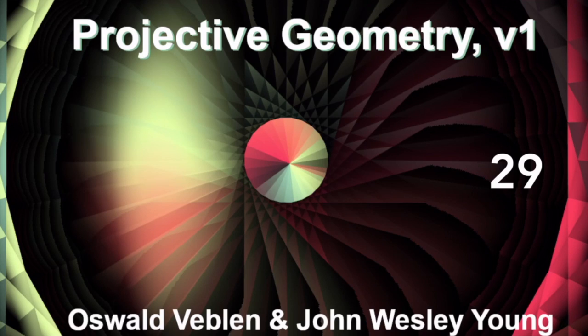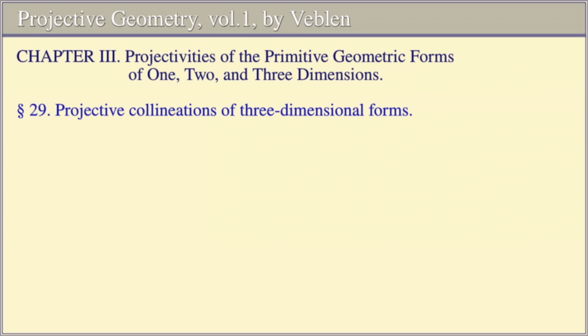Projective Geometry, Volume 1, by Oswald Veblen and John Wesley Young. Chapter 3: Projectivities of the Primitive Geometric Forms of 1, 2, and 3 Dimensions.